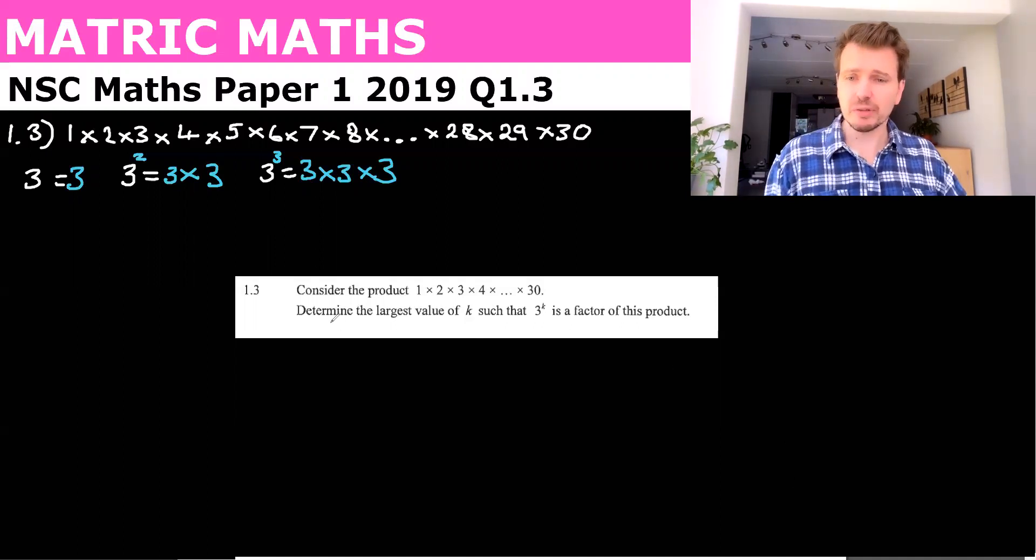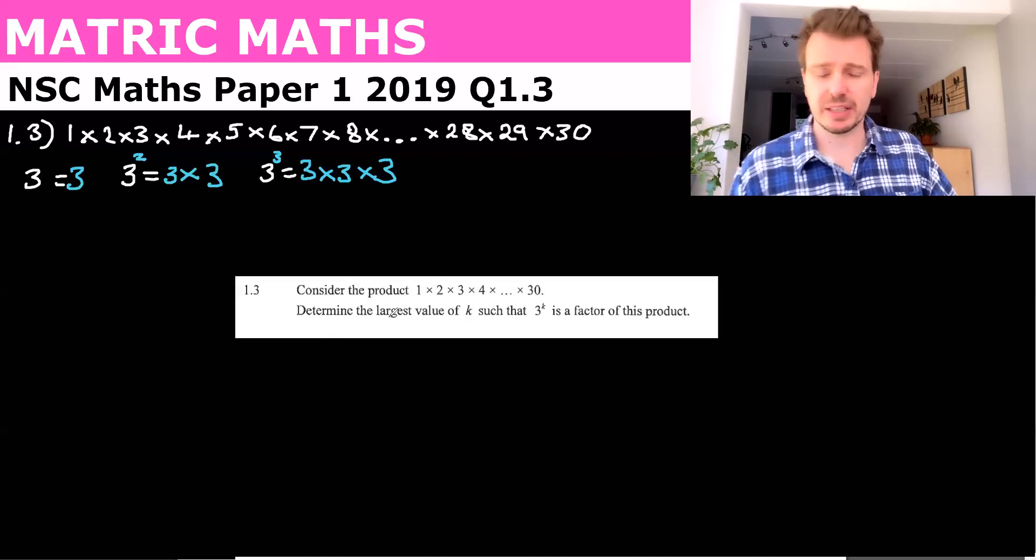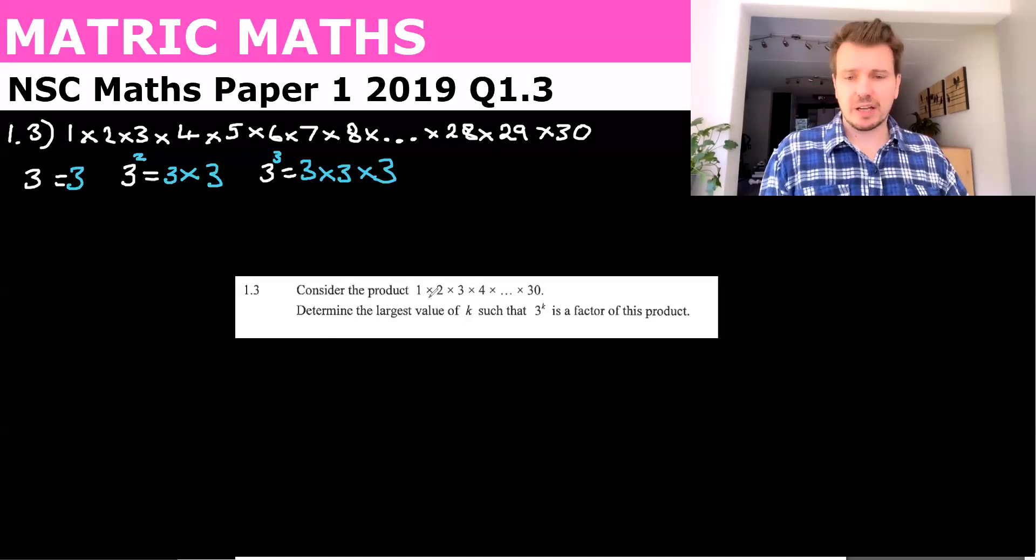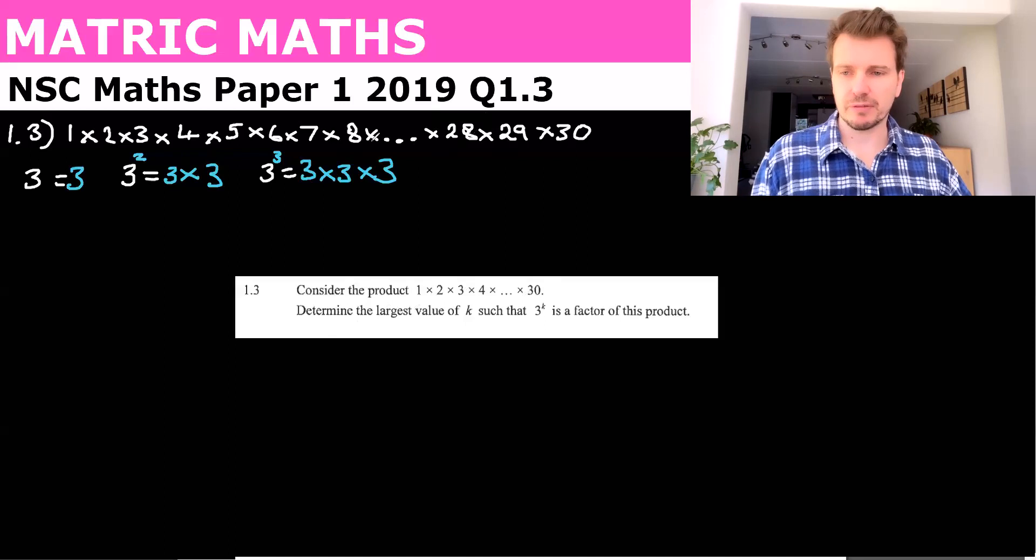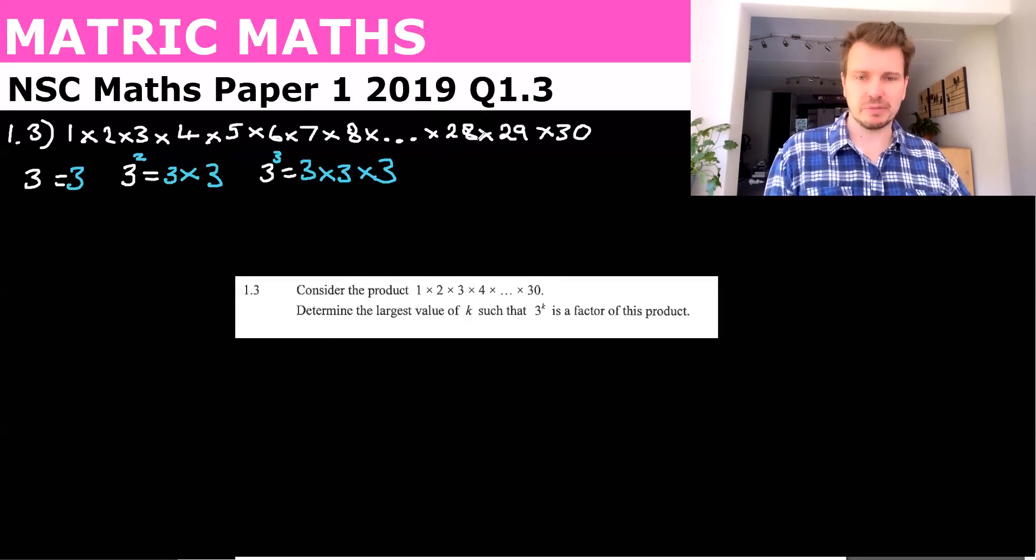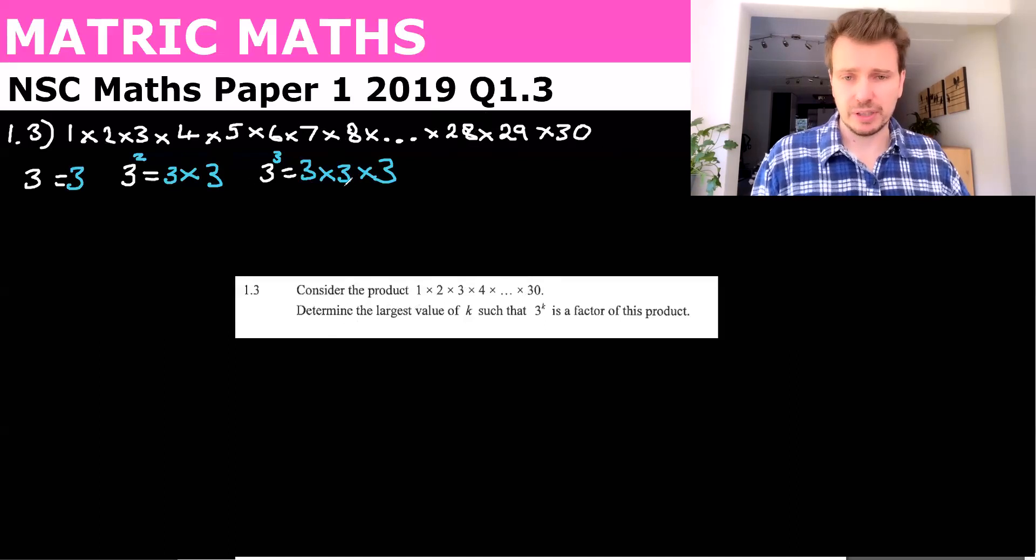So it was question 1.3, and it says, consider the product 1 times 2 times 3 times 4, etc., all the way to 30. So I've written this in a little bit more detail, but basically what it means is 30 factorial. If you aren't familiar what factorial means, it means all the numbers up to 30 when you multiply them together, all the positive integers.